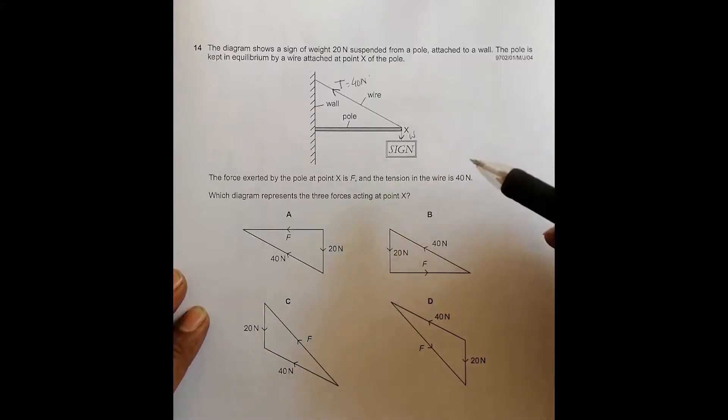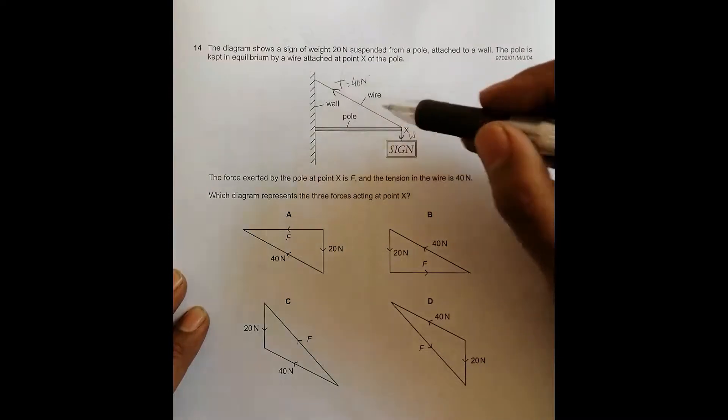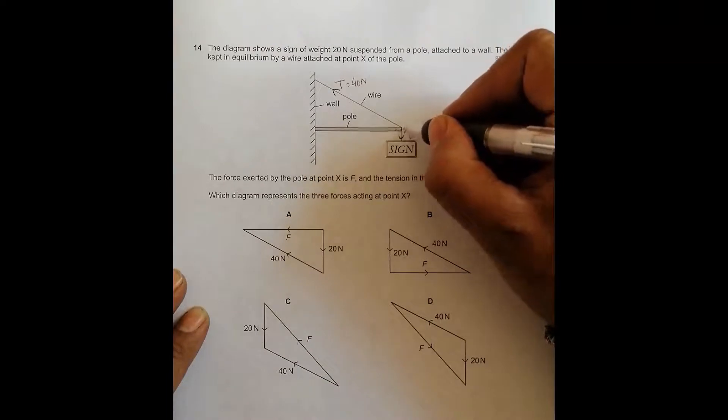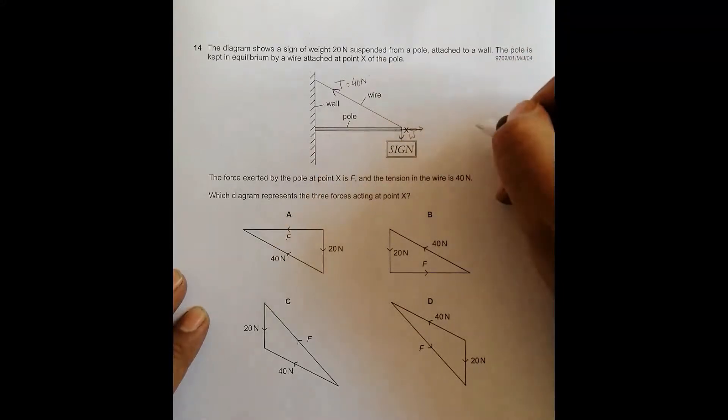Now, the main factor is the force at point X due to the pole. The force by the pole on X should be in this direction. This force should be in this direction because it is the force by the pole on X, so it should be like this. Let's search for that.